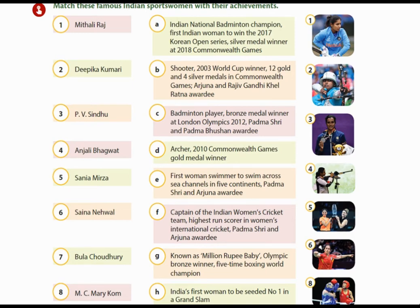Sania Mirza is India's first woman to be seeded number one in a Grand Slam. Saina Nehwal is a badminton player, bronze medal winner at the London Olympics 2012, and a Padma Shri and Padma Bhushan awardee. Bula Choudhury is the first woman swimmer to swim across sea channels in five continents and is a Padma Shri and Arjuna awardee. MC Mary Kom, known as the 'Million Dollar Baby,' is an Olympic bronze winner and five-time boxing world champion.